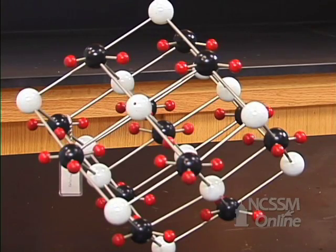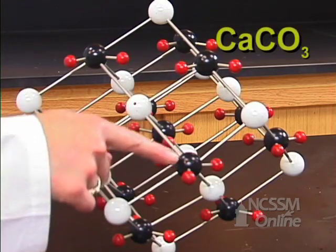This is another example of an ionic compound, but one of the ions is formed by covalent molecules. This is a carbonate.